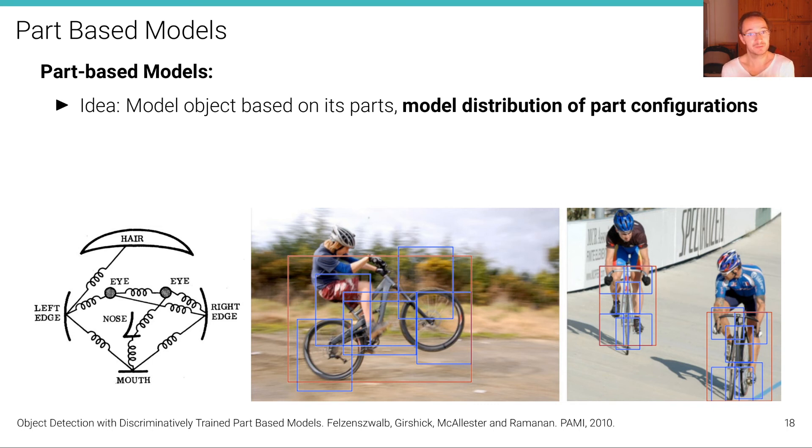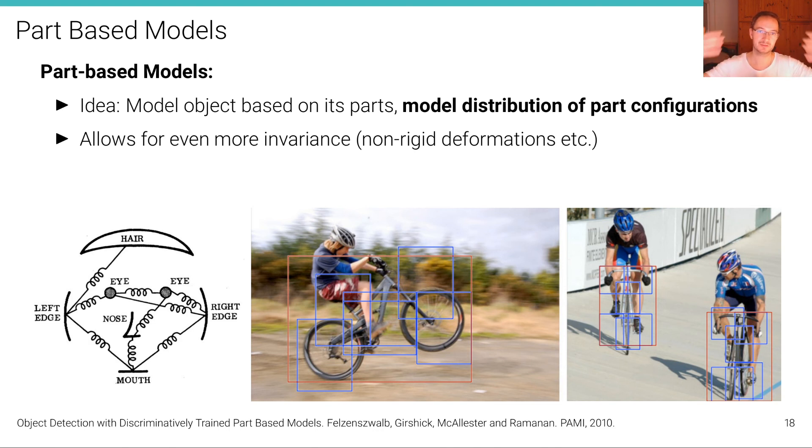An extension of this idea of histogram of oriented gradients that became popular in 2010 is the so-called part-based model from Felzenszwalb and Girshick et al. Where the idea is to model an object based on its parts and then model the distribution of part configurations. And this idea actually goes back many years to the 1970s. But here this is used in combination with a graphical model and this histogram of oriented gradient features for each of these parts. Now using a part-based model allows for even more invariance because we can allow for some non-rigid deformations of the object by simply adjusting the relationship of the different parts and modeling this in terms of the configuration space in terms of the graphical model distribution.